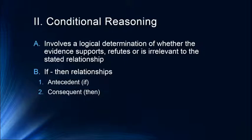These are usually stated as if-then relationships. The antecedent is the 'if', and the consequent is the 'then'. For example: if I am a freshman, then I have to register today. The antecedent is 'if I am a freshman'; the consequent is 'then I have to register today' — the consequence of fulfilling the antecedent.